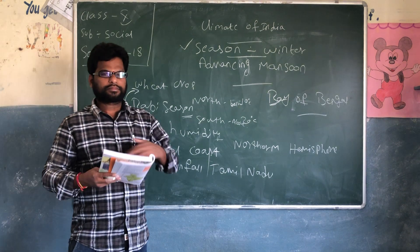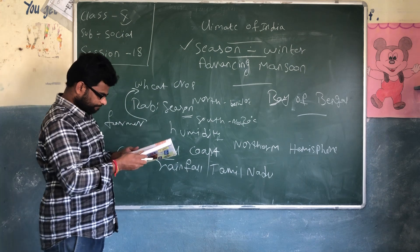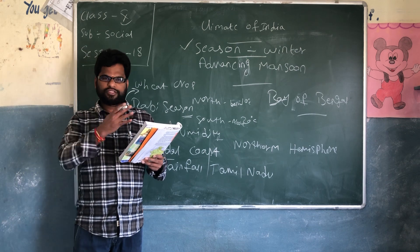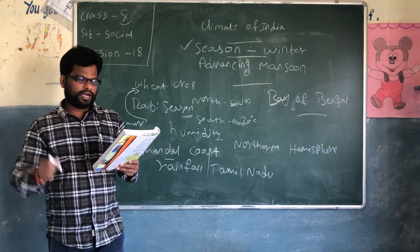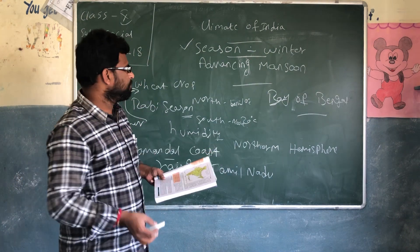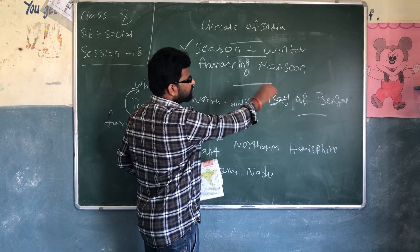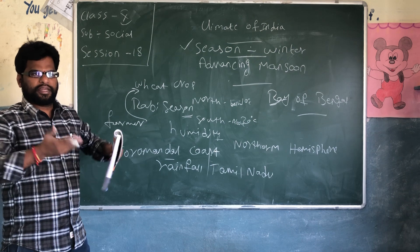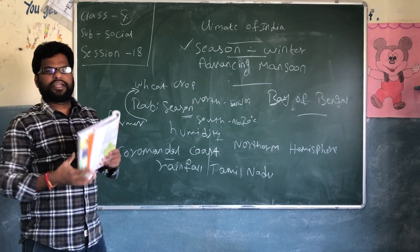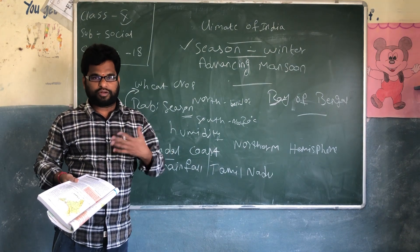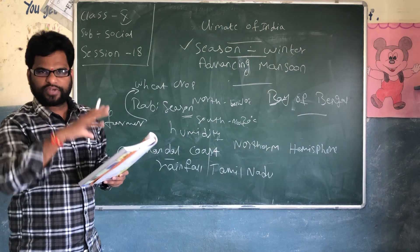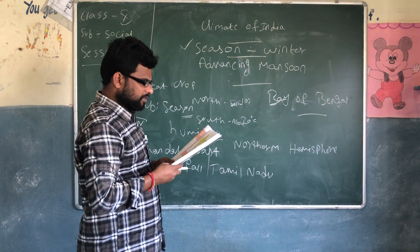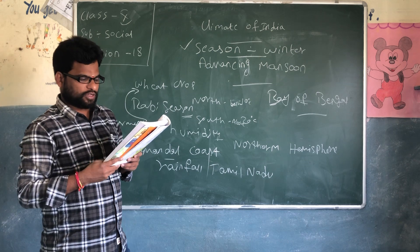Now if we go to the summer season — during the hot season, as we move from the southern to the northern part of the country, the average temperature increases. Starting in April, the temperature rises slowly. The maximum temperature exceeds 37 degrees Celsius in the north of the plains of India.